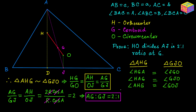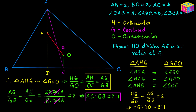Next we are going to prove that G also divides the line segment HO in a 2 to 1 ratio. Since we have proved that AG to GJ equals 2 to 1, and from the similar triangles we have HG over GO equal to AG over GJ, it follows that the ratio HG to GO is also 2 to 1. This means the centroid divides the line segment HO — joining the orthocenter and the circumcenter — in a 2 to 1 ratio, with the HG portion being 2 and the GO portion being 1.